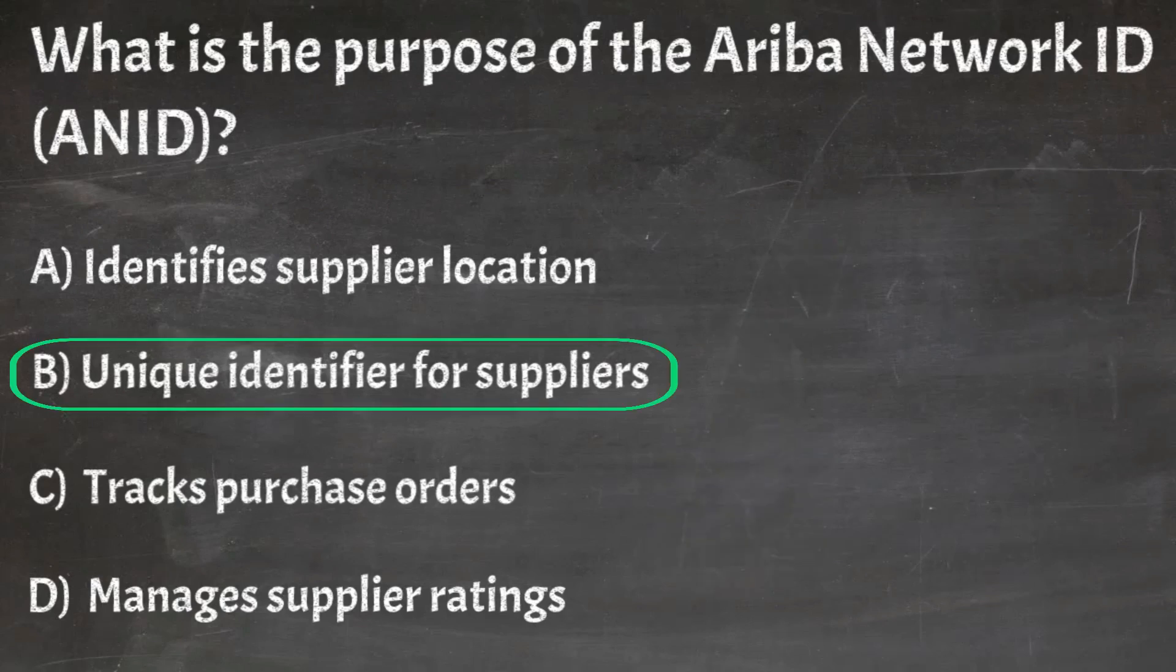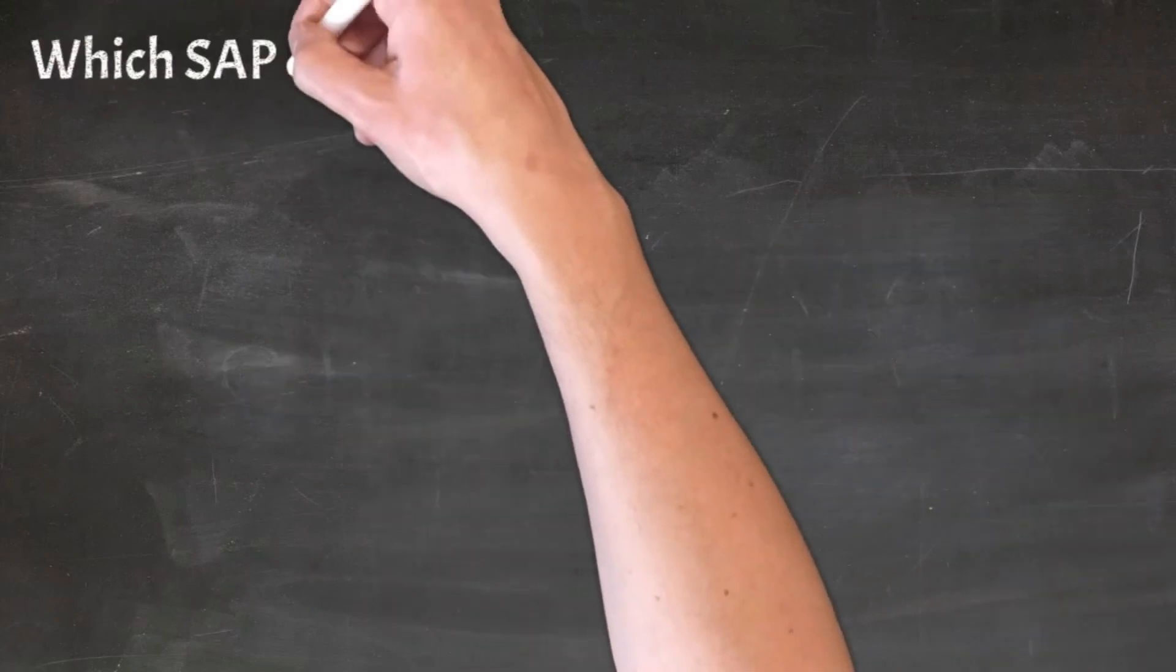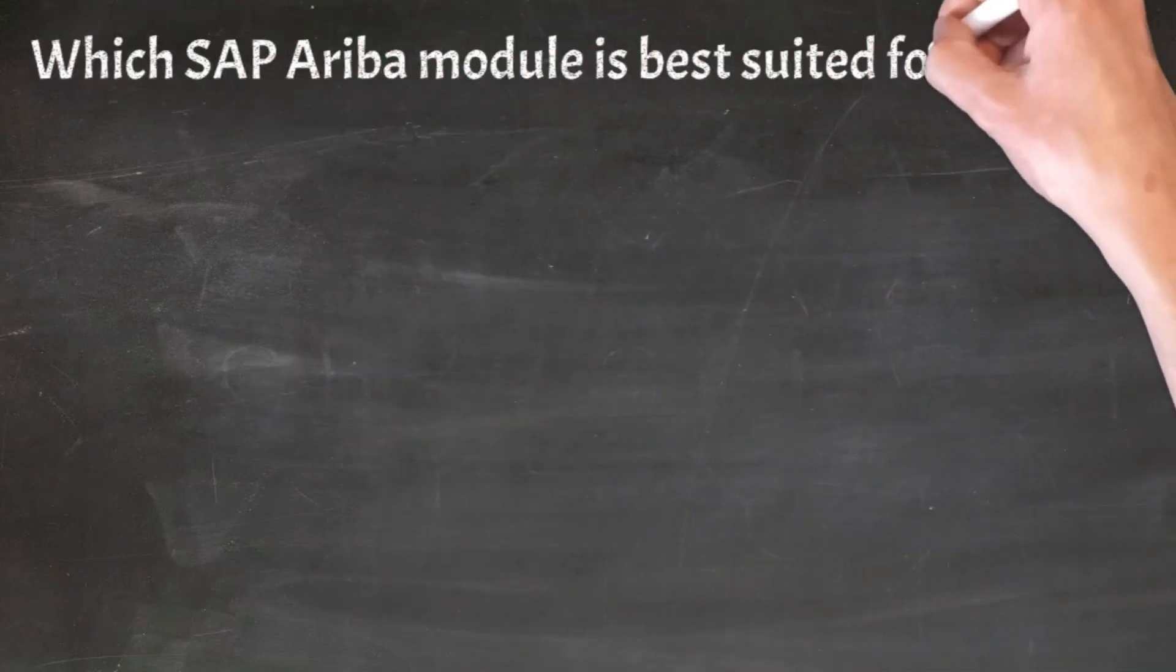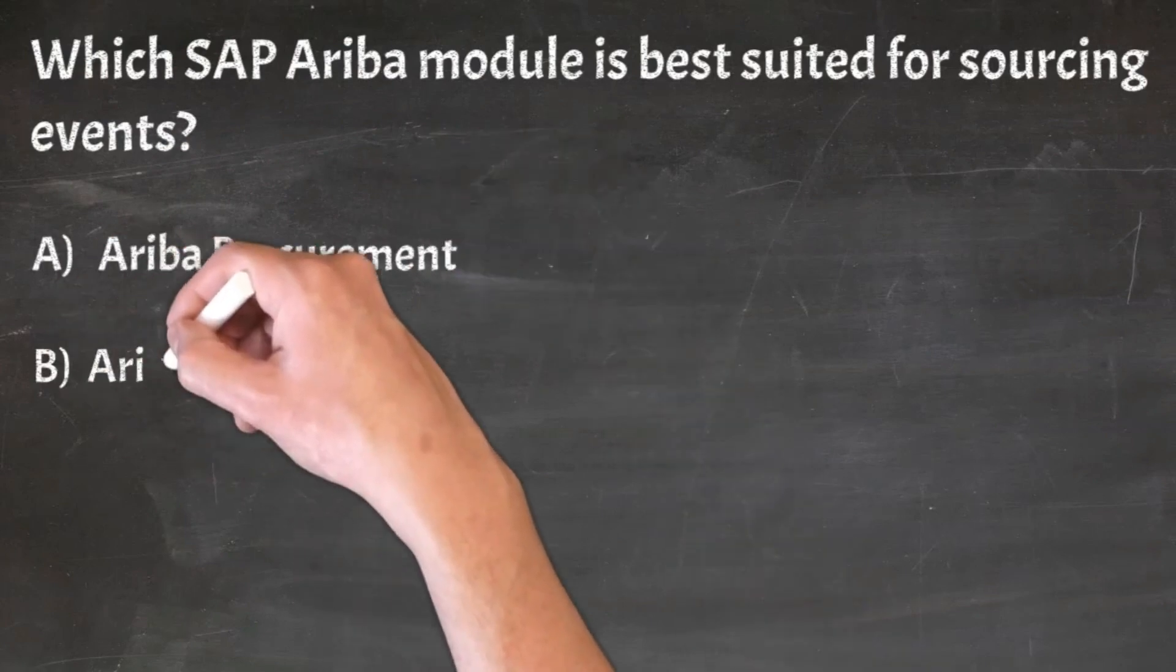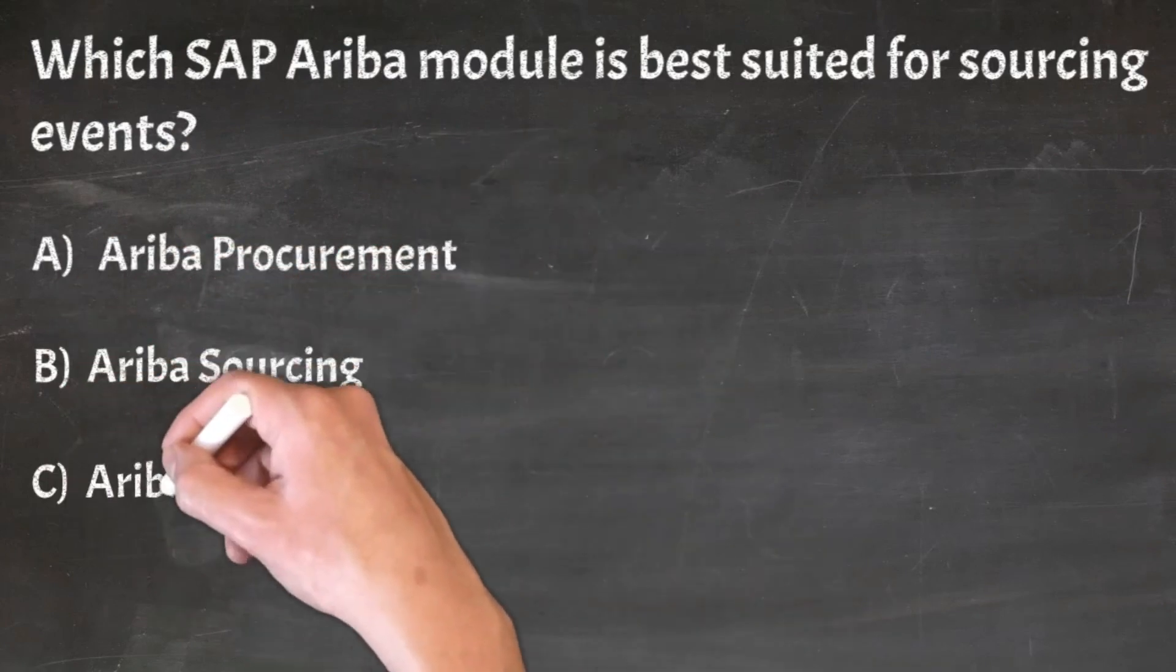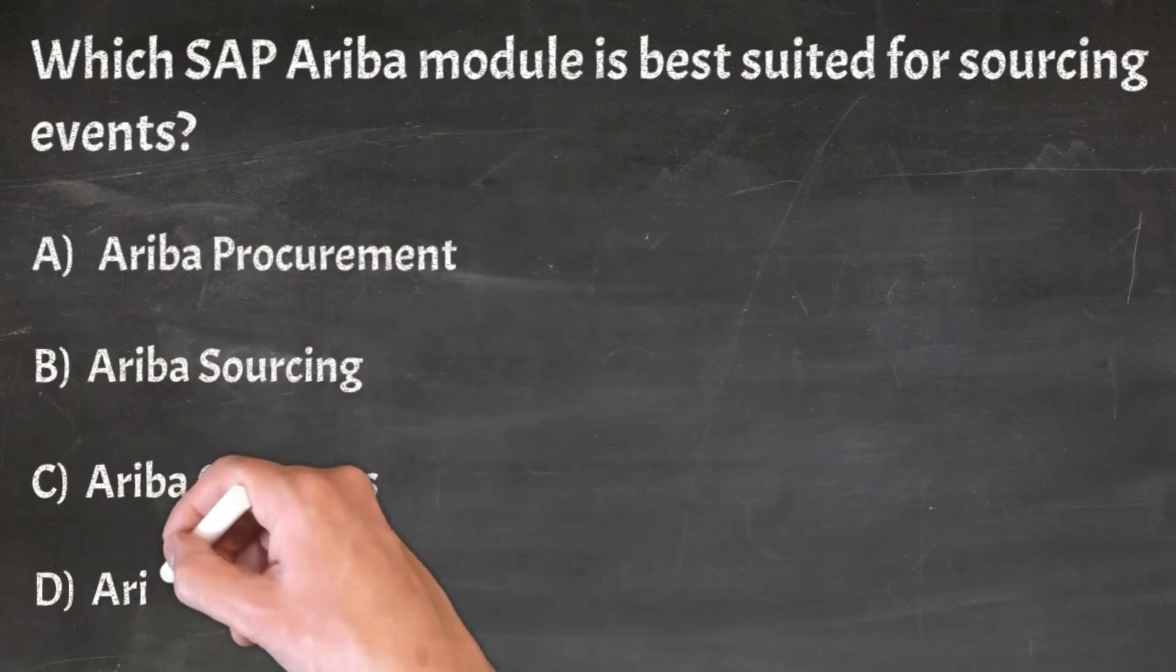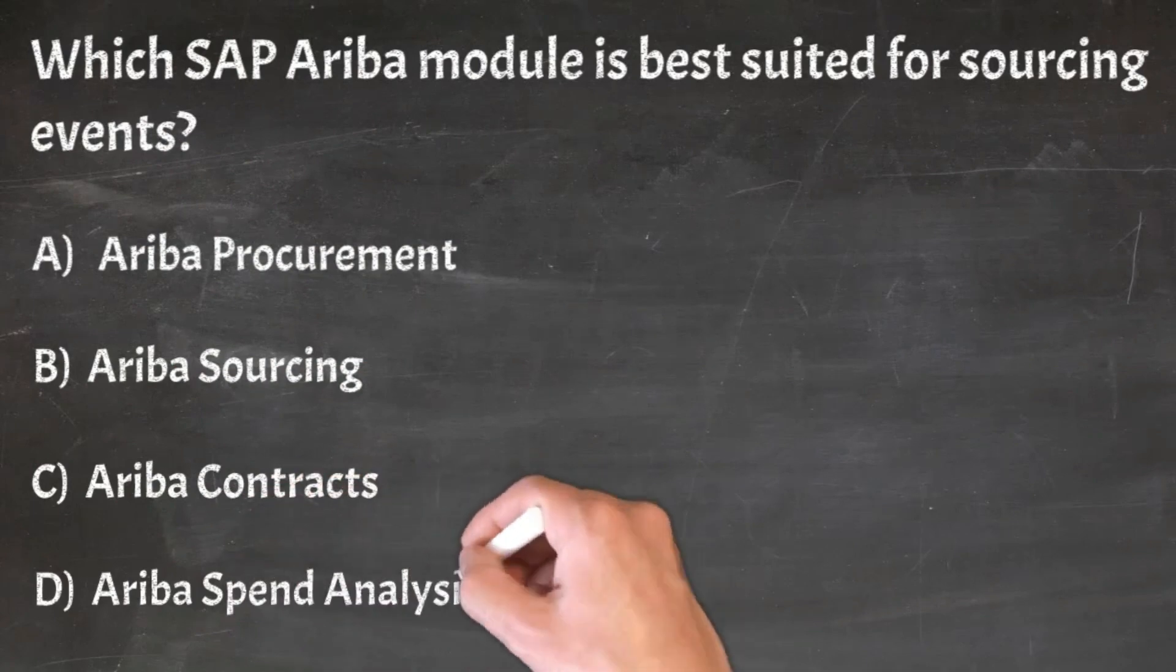Correct answer: B. Unique identifier for suppliers. Question 17: Which SAP Ariba module is best suited for sourcing events? A. Ariba procurement, B. Ariba sourcing, C. Ariba contracts, D. Ariba spend analysis.